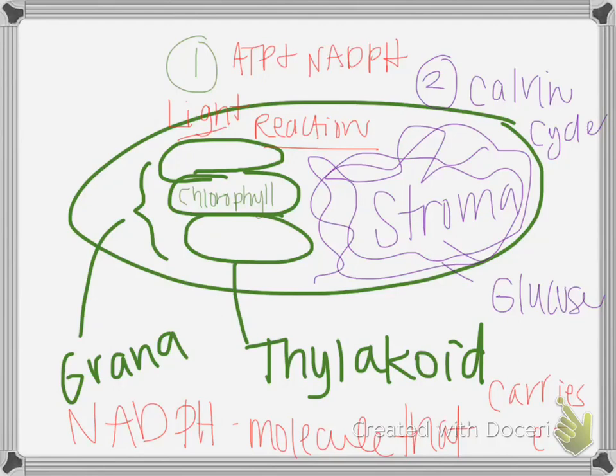Let's quickly review. The chloroplast has a membrane inside it called the thylakoid. In the thylakoid, it takes in sunlight energy and makes ATP and NADPH. So the light reaction uses sunlight energy and changes that energy into cellular energy. The Calvin cycle then uses that cellular energy to make glucose.